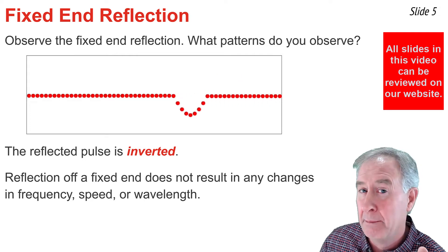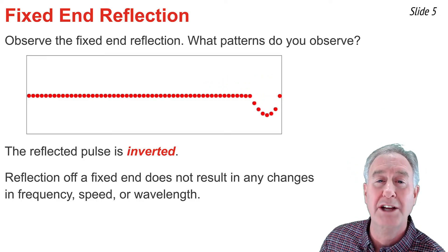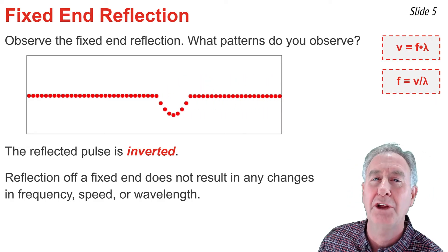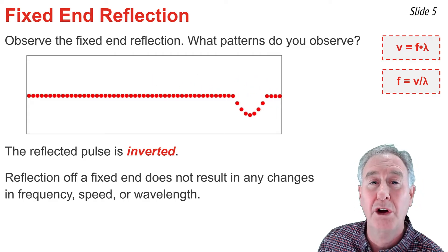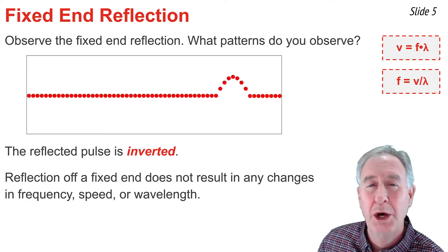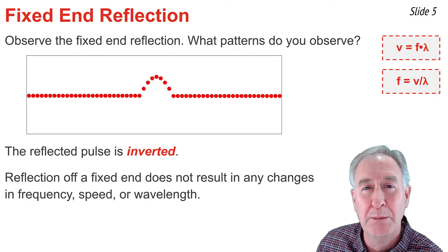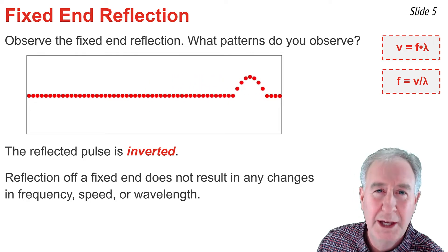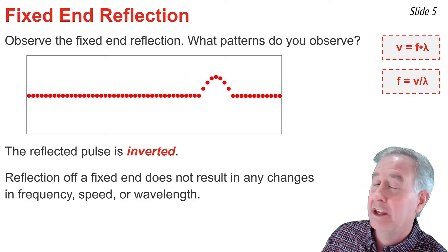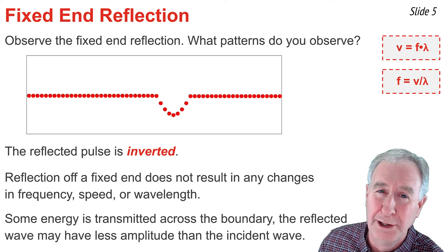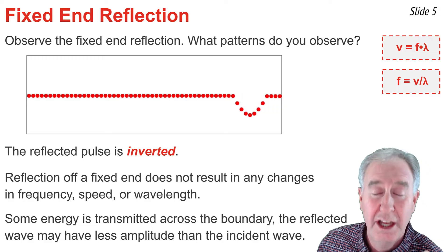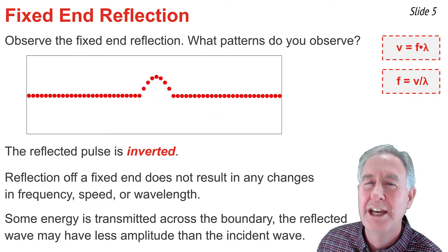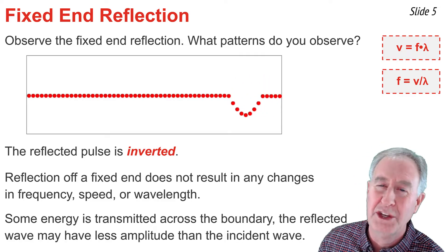The second observation is that there's no noticeable change in the speed or the wavelength of the wave. The pulse approaching the boundary had about the same speed and same length as the pulse that reflects off the boundary. And because frequency depends upon speed and wavelength, we would not expect any alteration in the frequency. After all, waves propagate by particle-to-particle interaction — one particle forces its neighboring particle into vibrational motion at the same frequency. Finally, though not pictured in the animation, we would expect the amplitude of the reflected pulse to be less than the amplitude of the incident pulse, since a portion of the energy is always transmitted across the boundary, and because amplitude reflects the amount of energy transported by the wave, a loss of energy means a loss of amplitude.